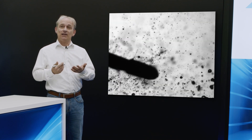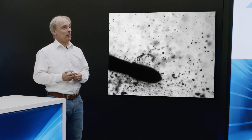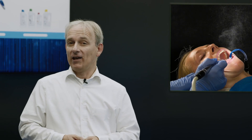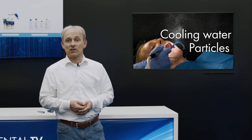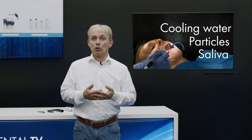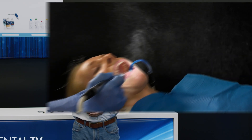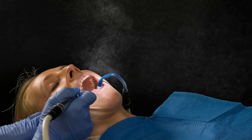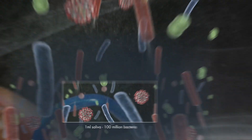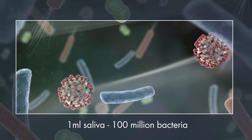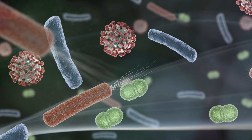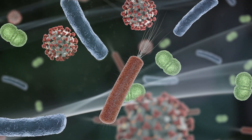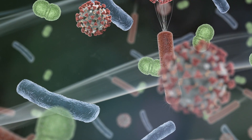These particles leave the patient's mouth as a spray mist. Why is this spray mist potentially infectious? This cloud consists of cooling water, particles such as tooth substance or powder, but also saliva and blood. Over 600 different types of bacteria have been identified in saliva, and over 100 million bacteria per milliliter of saliva are in these particles.